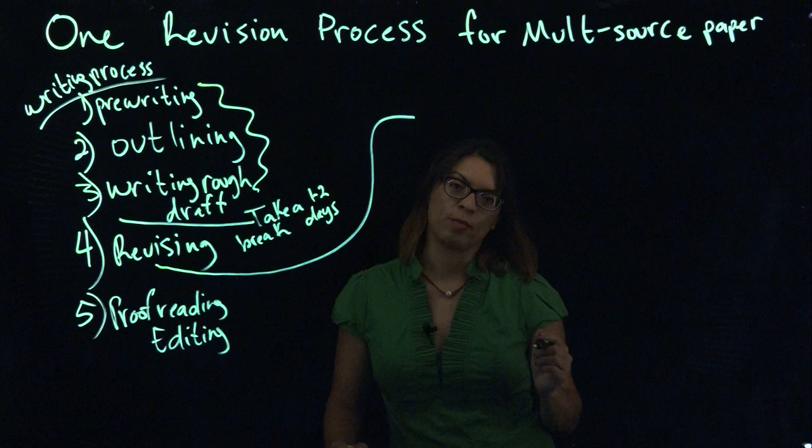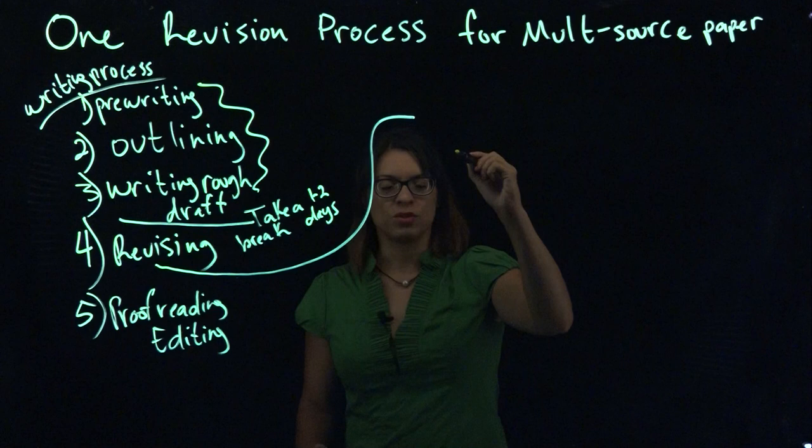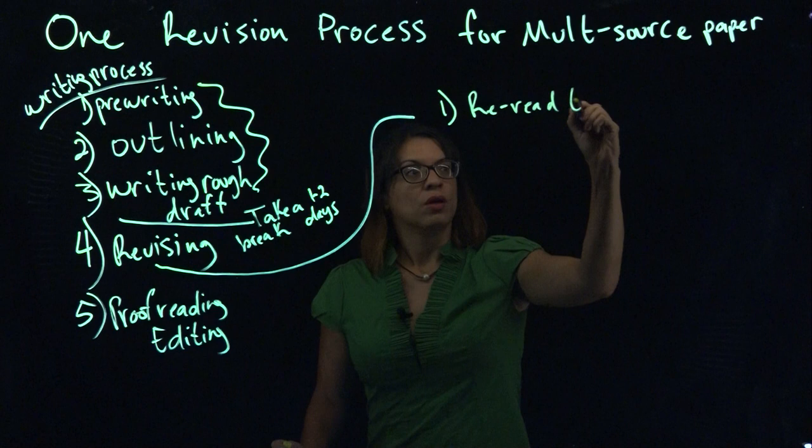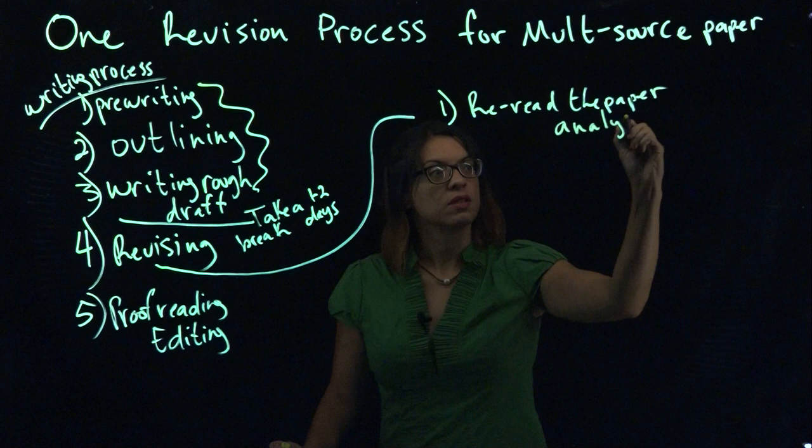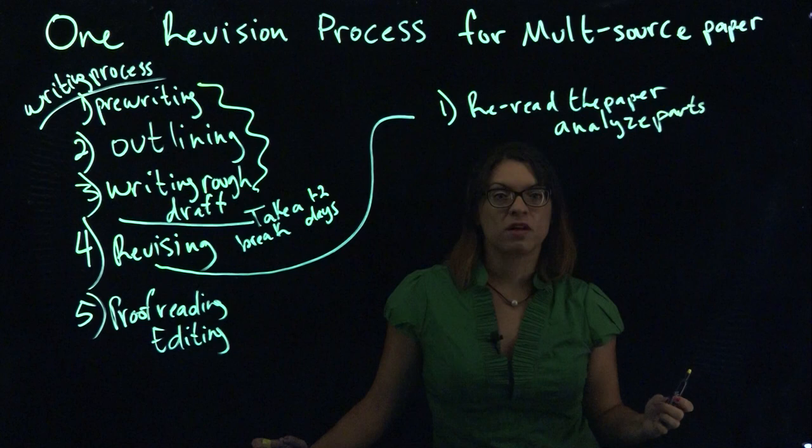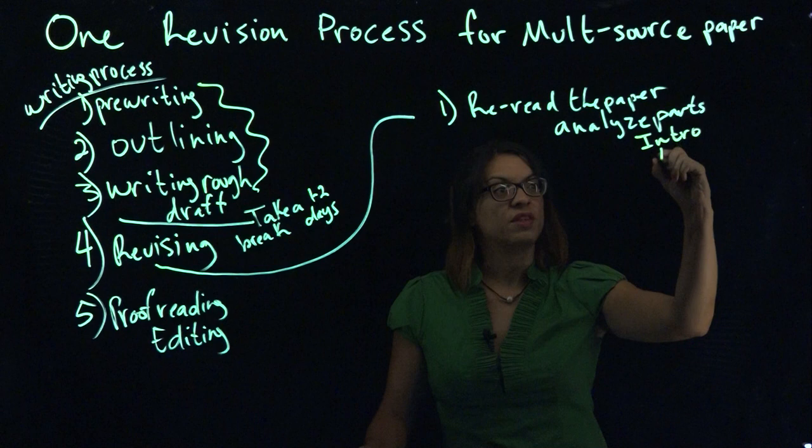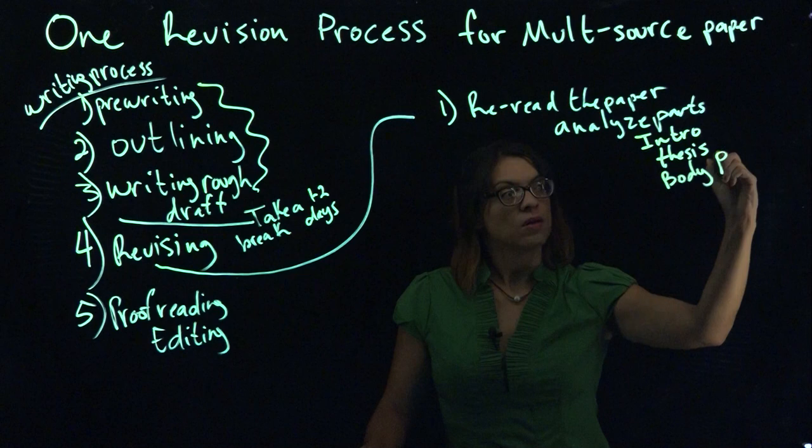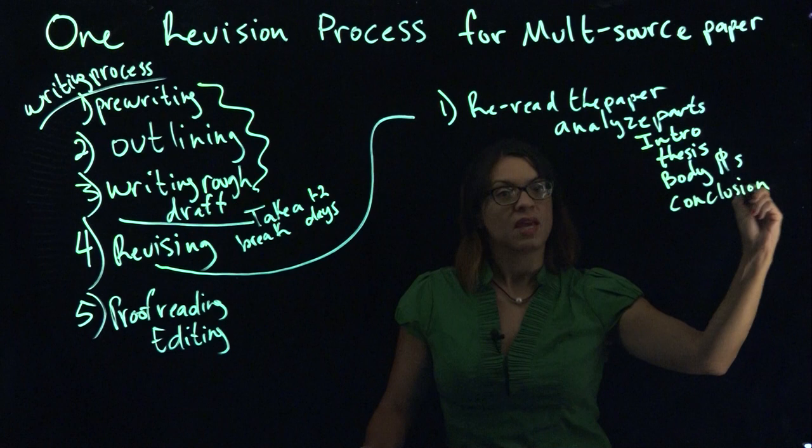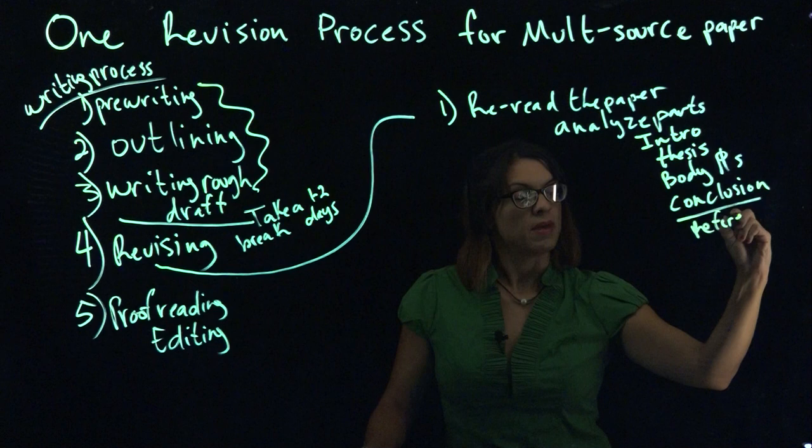Your revision process can take a few steps, at least maybe five or so. What you want to do is start off by rereading that paper, and then analyze its different parts. Look and see how the parts of the paper are functioning together to create that larger whole of your essay. The different parts of your paper would include things like your intro, your thesis, your body paragraphs, and then your conclusion.